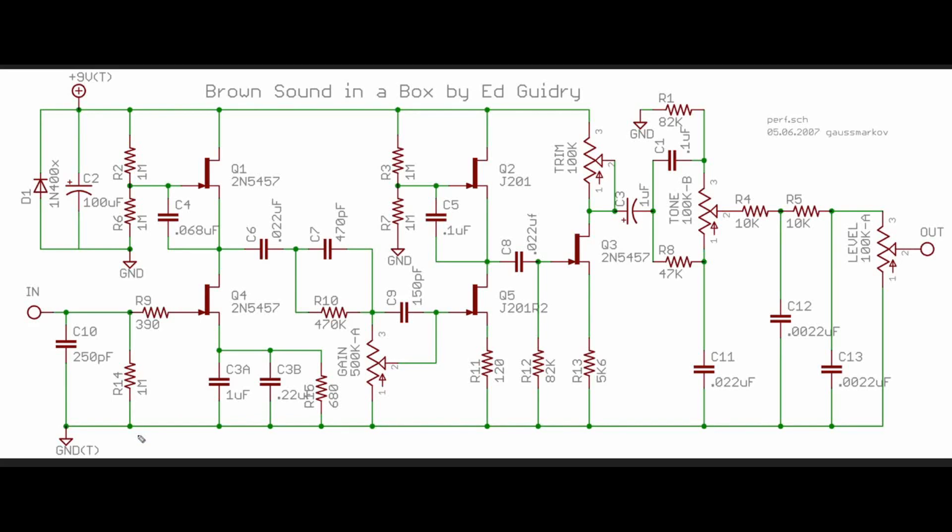Now the mu-amp circuit actually originates from the vacuum tube days where you may not have triodes that are very high gain available but you need large amounts of voltage gain. And so what they would do is they would configure two triodes in this mu-amp configuration so that two normal triodes that were not of particularly high gain could give you a very large amount of gain on the output.